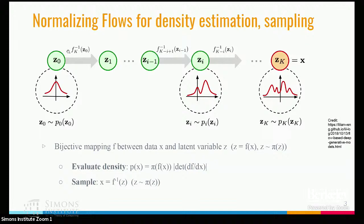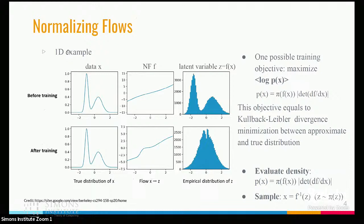These maps are bijective, and we want to be able to both invert these individual maps — so they need to be simple to invert — and perhaps even more importantly, we want to be able to compute the Jacobian of the transformation so that we are able to compute the density of whatever we want to estimate. The two basic applications of normalizing flows are: first, we can sample from the latent space and create realistic samples; and second, we can estimate the density of some data.